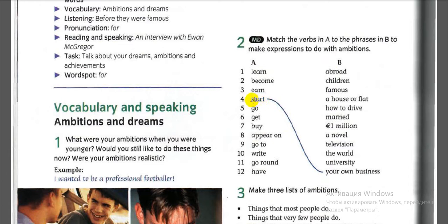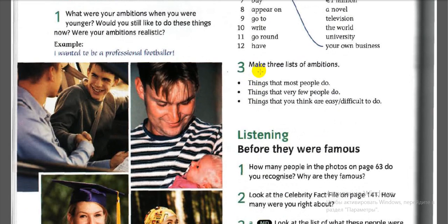Let's check the answers. First: learn how to drive. Second: become famous. Third: earn one million. Fourth: start your own business. Fifth: go abroad. Six: get married. Seven: buy a house or flat. Eight: appear on television. Nine: go to university. Ten: write a novel. Eleven: go around the world. Twelve: have children.